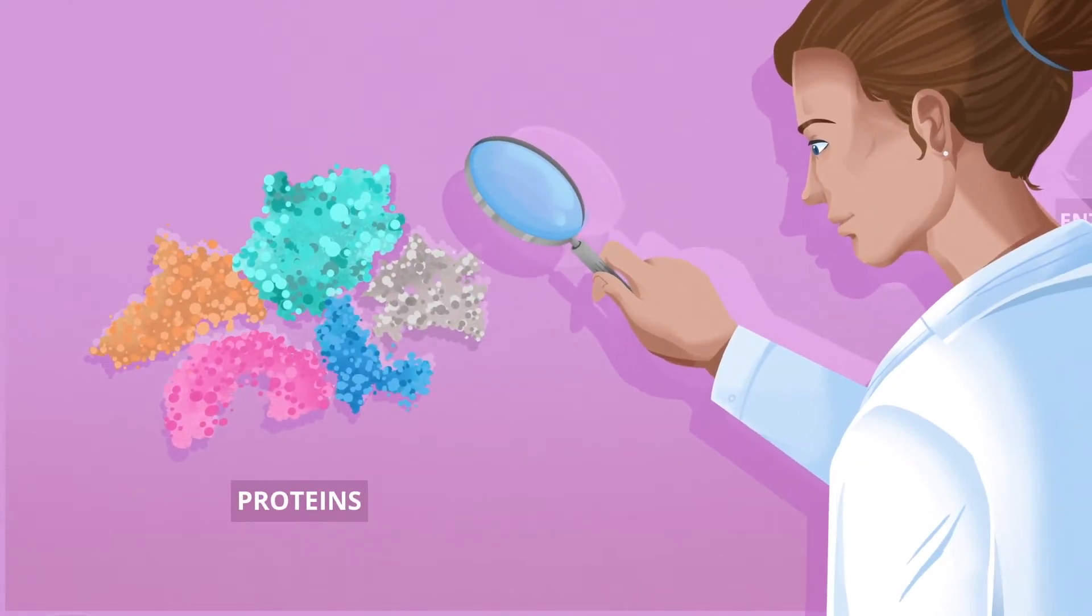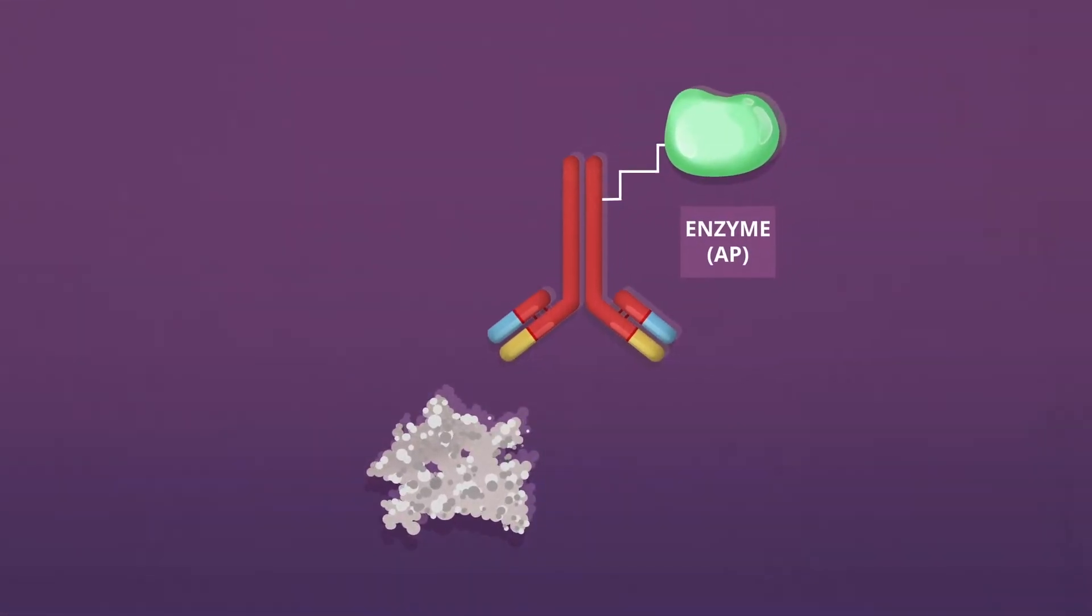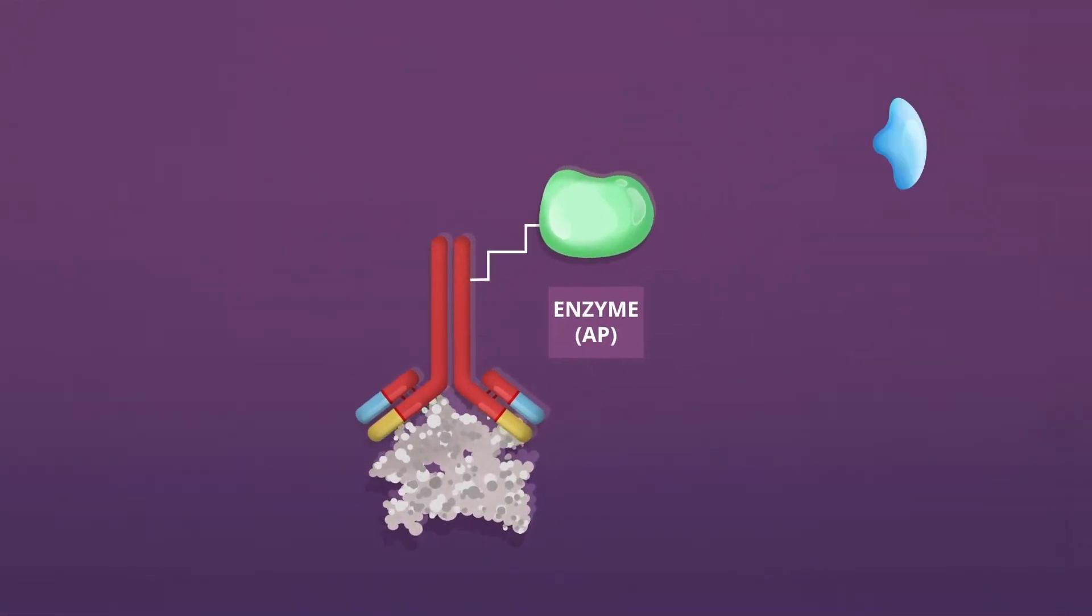Most protein detection methods rely on antibodies coupled to enzymes such as alkaline phosphatase. Using a suitable substrate, a signal lights up if the protein is present.